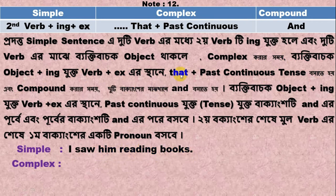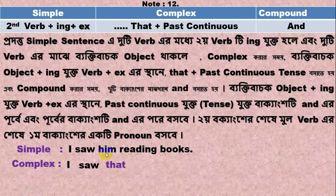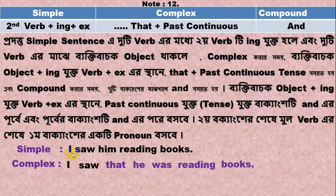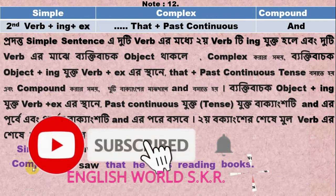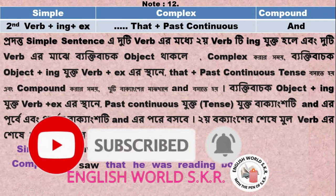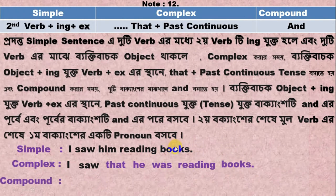The past continuous tense applies here. 'Him reading books' in the simple sentence becomes the past continuous tense. So the simple sentence 'I saw him reading books' transforms into the complex sentence 'I saw that he was reading books.'